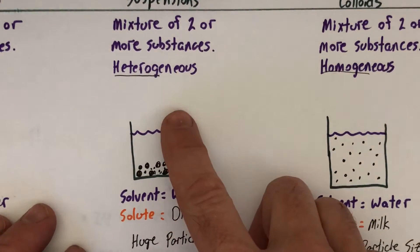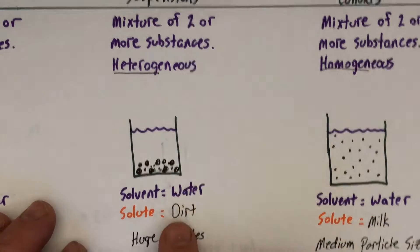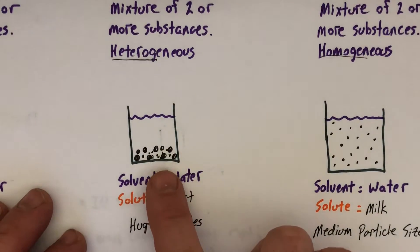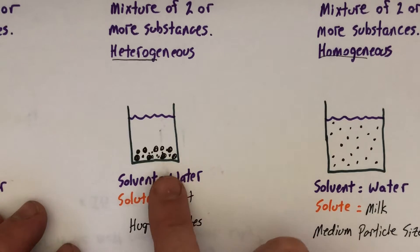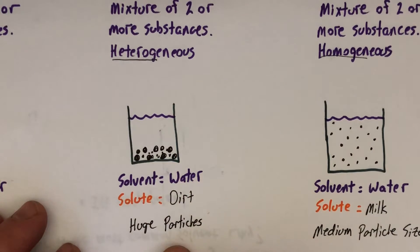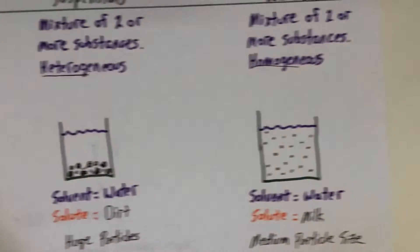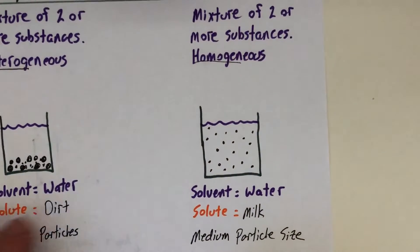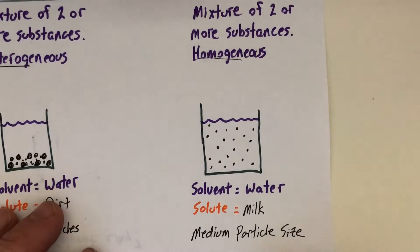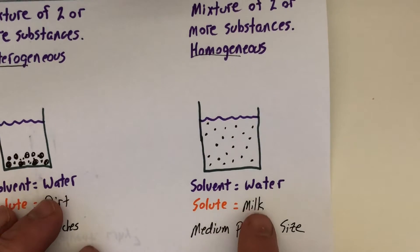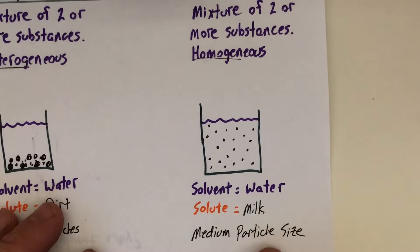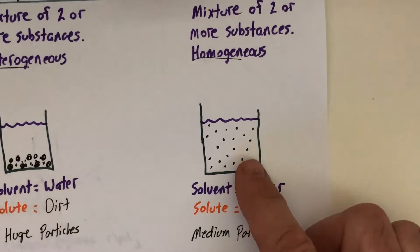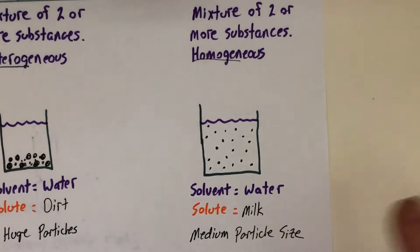In a suspension, particles are so big — like dirt particles — that they'll sink to the bottom. Those are huge particles. Colloid particles are somewhere in the middle, like the milk. They're medium-sized: big enough that we can actually see them, but still small enough that they won't fall to the bottom. It'll stay cloudy like that forever.